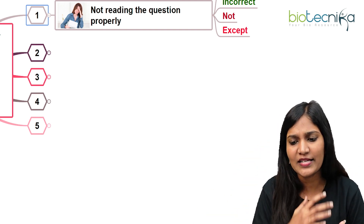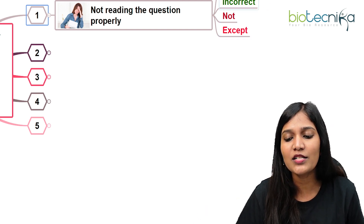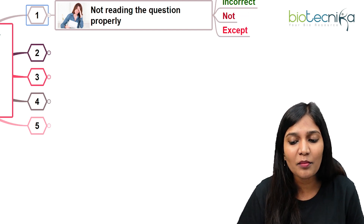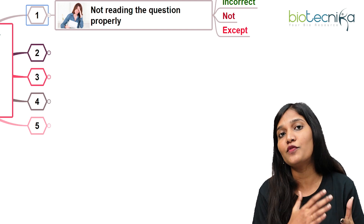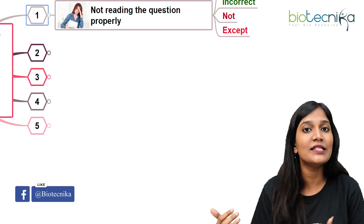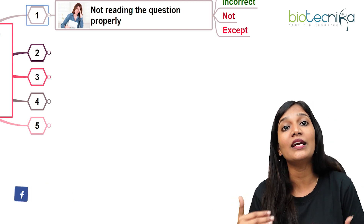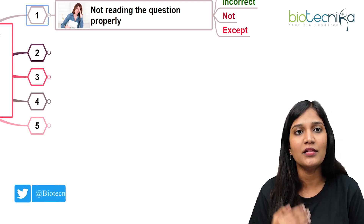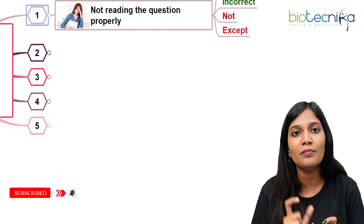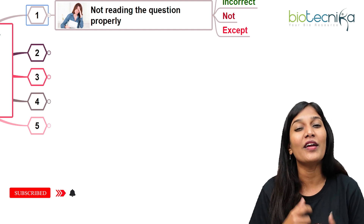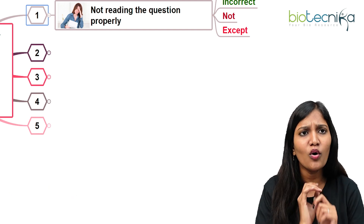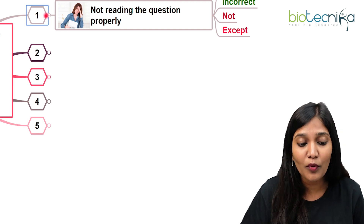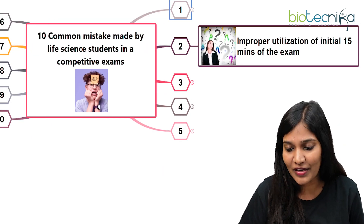When reading a GATE, ICMR, CSIR, or any competitive examination paper, look for words like 'correct,' 'incorrect,' 'not,' and 'except.' Questions will ask which of the following are correct, which are incorrect, or which is correct except. Read every question properly and look for the most important keywords asked. Many students have ended up getting negative marks because of this. Always concentrate on the question and read every question properly.